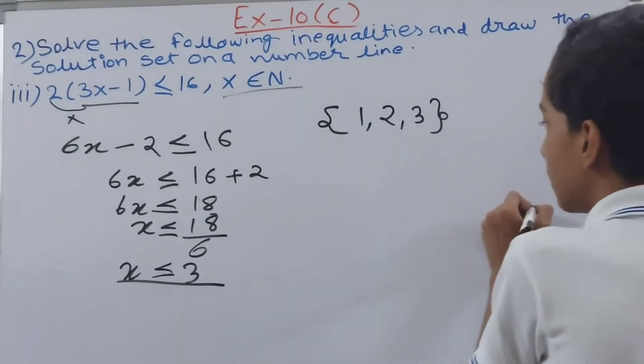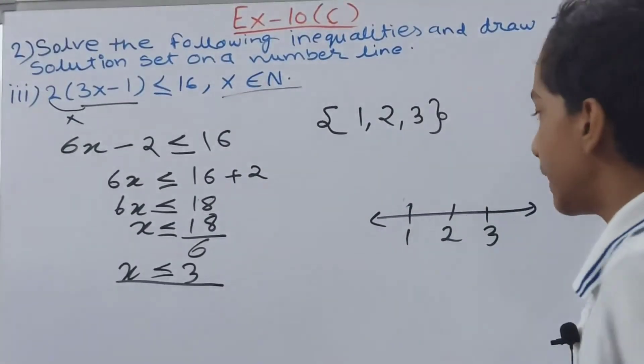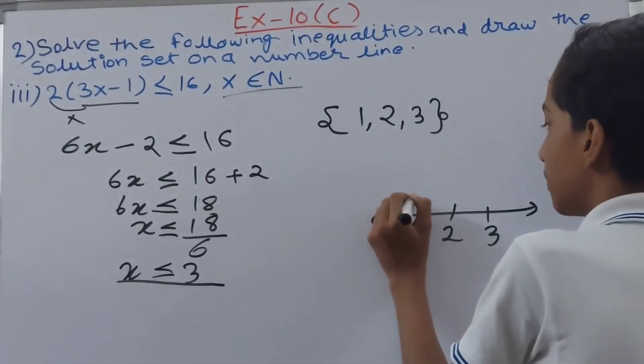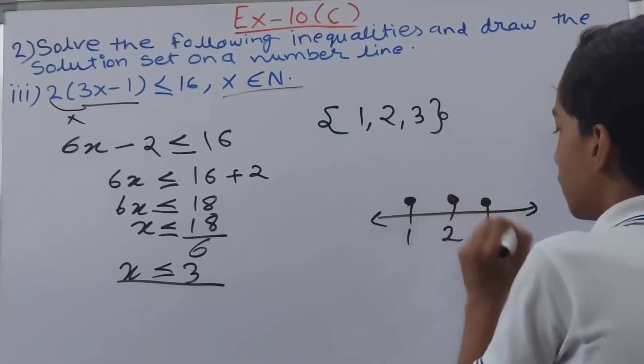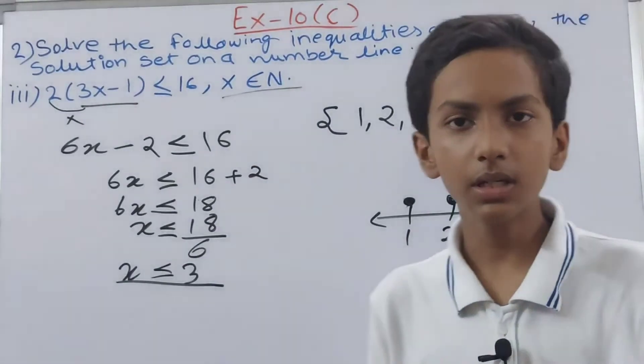Just that simple. Now we make the number line here. And very simple, we just circle them up here. Like this. Alright. And this is how we have solved the third inequality.